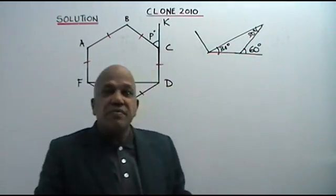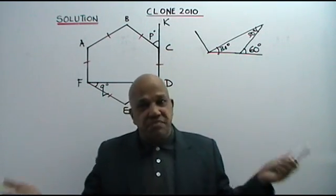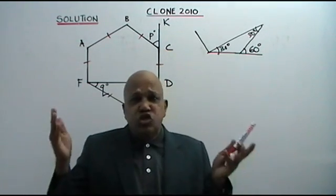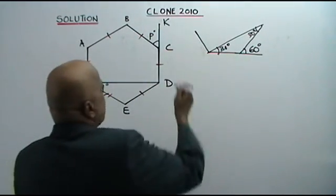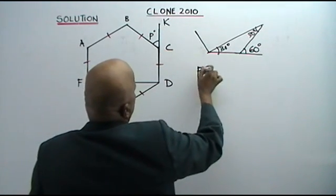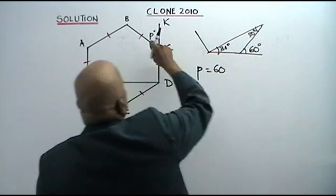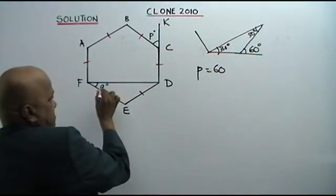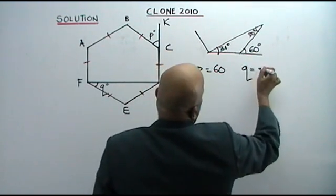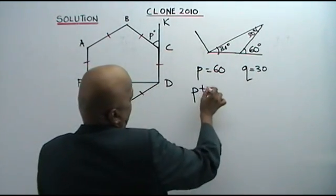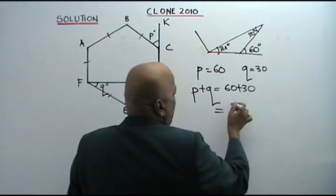Just memorize and you can do the question super fast. If you look carefully, P is the exterior angle — therefore P is equal to 60 degrees. And Q equals 30 degrees. Therefore, P plus Q equals 60 plus 30, which equals 90. That is your answer.